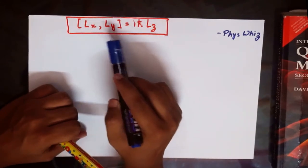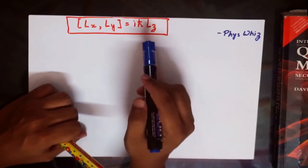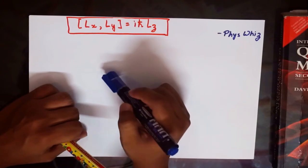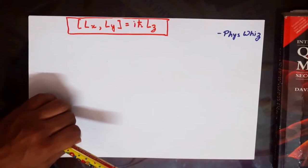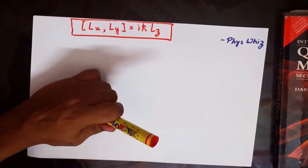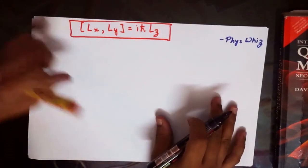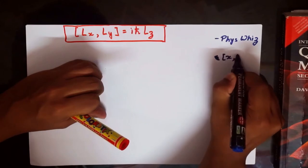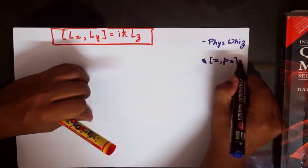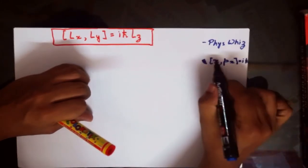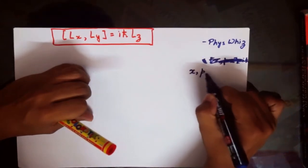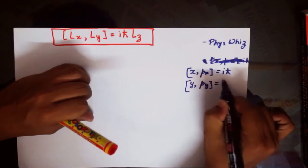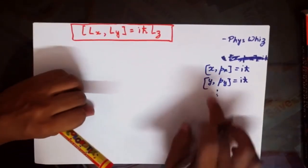The commutator of Lx with Ly gives you iℏLz, which is the z-component of the angular momentum operator, while Lx and Ly are the x and y components respectively. I'll show you how to evaluate this accurately using commutator algebra and the fundamental relation that the commutator of position with momentum equals iℏ, and similarly for the different components.